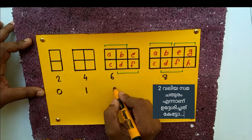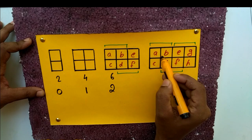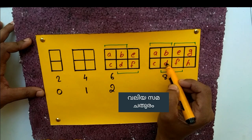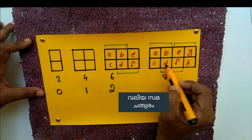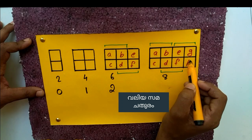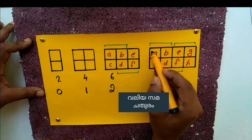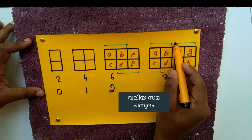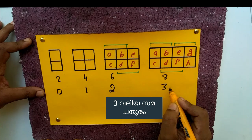This is 2 values. This is ABDC. This is BEFD and EGHF. So, this is 1, 2, 3 — so this is 3 values.